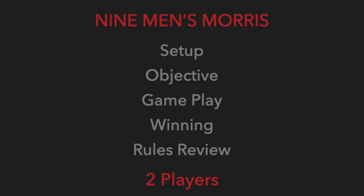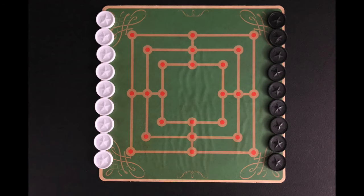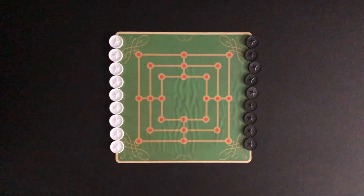The game is played with two players. To play, you will need a Nine Men's Morris board and nine markers per player. Each player starts with nine markers. Markers will be placed on the board on intersections. There are 24 intersections on the board indicated by the circles.